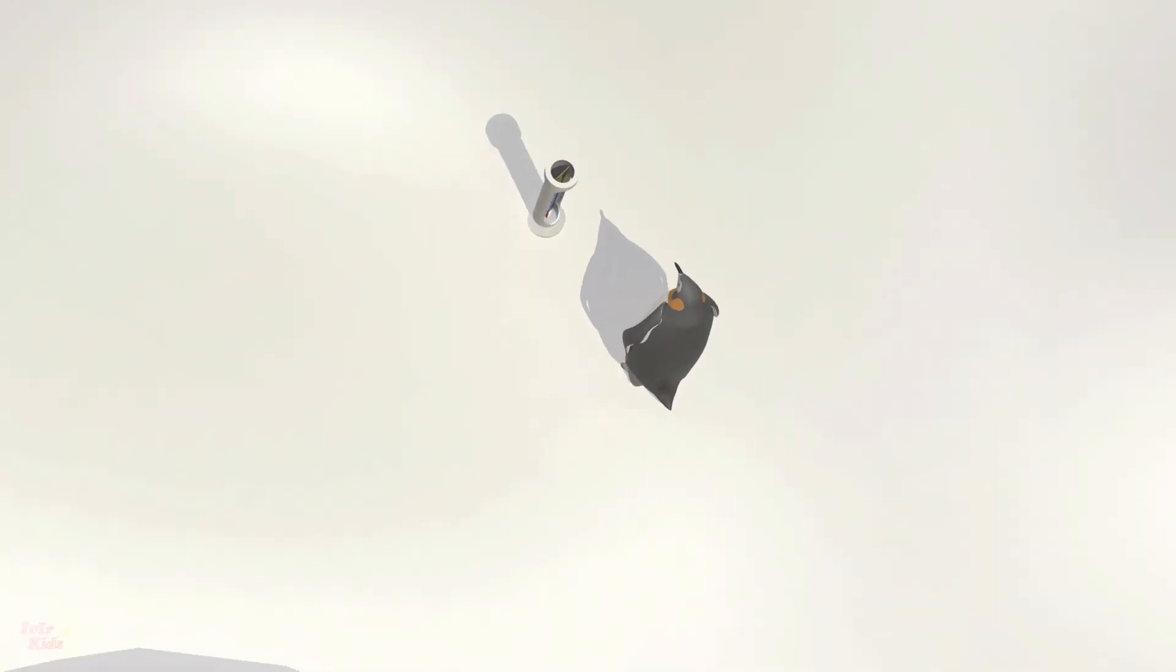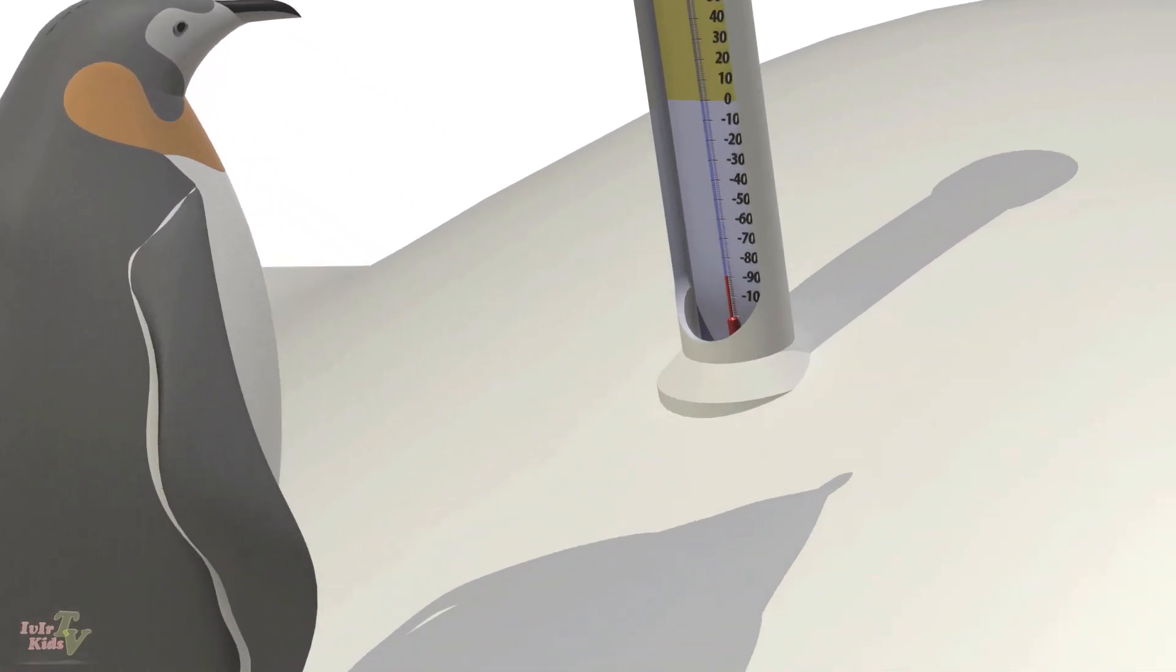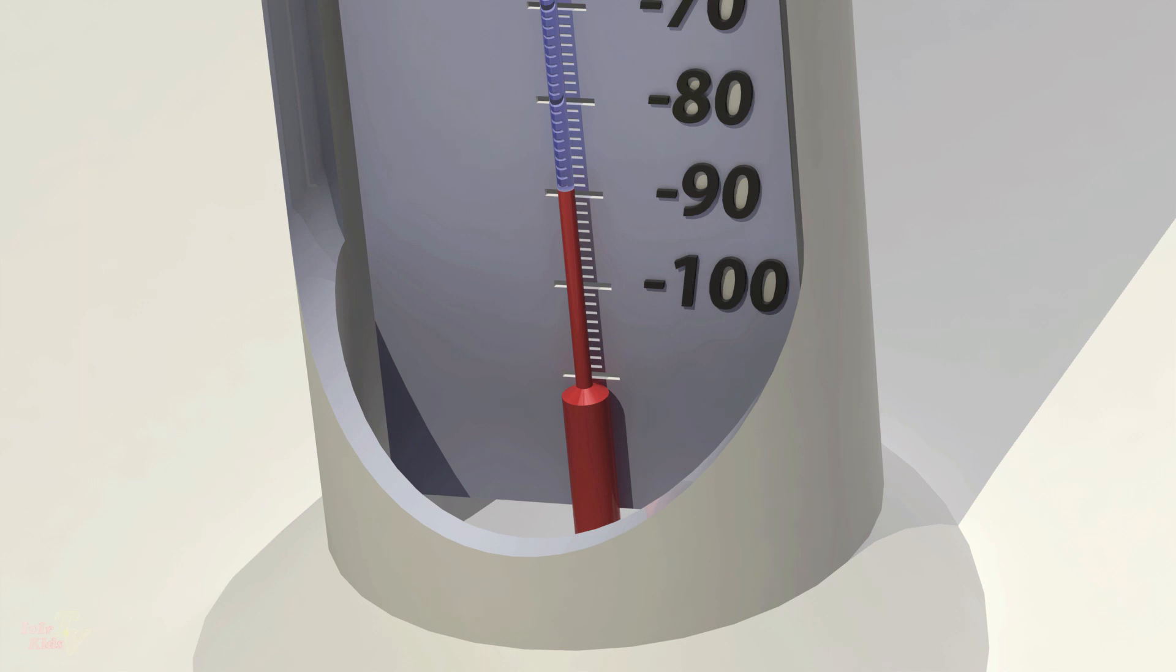There are also places where it is very very cold. The lowest temperature was recorded on Antarctica, 88.3 degrees.